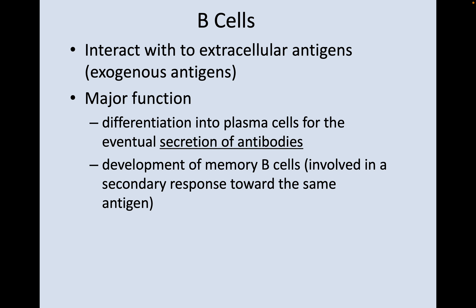Now let's talk about some adaptive immune cells. B cells interact with extracellular or exogenous antigens — things outside the cell, maybe on the surface or in the environment around the cell. Their major function is to differentiate into plasma cells for the eventual secretion of antibodies, and to develop memory B cells involved in a secondary response. So if years down the road you encounter the same pathogen or antigen again, your body will know how to respond appropriately.